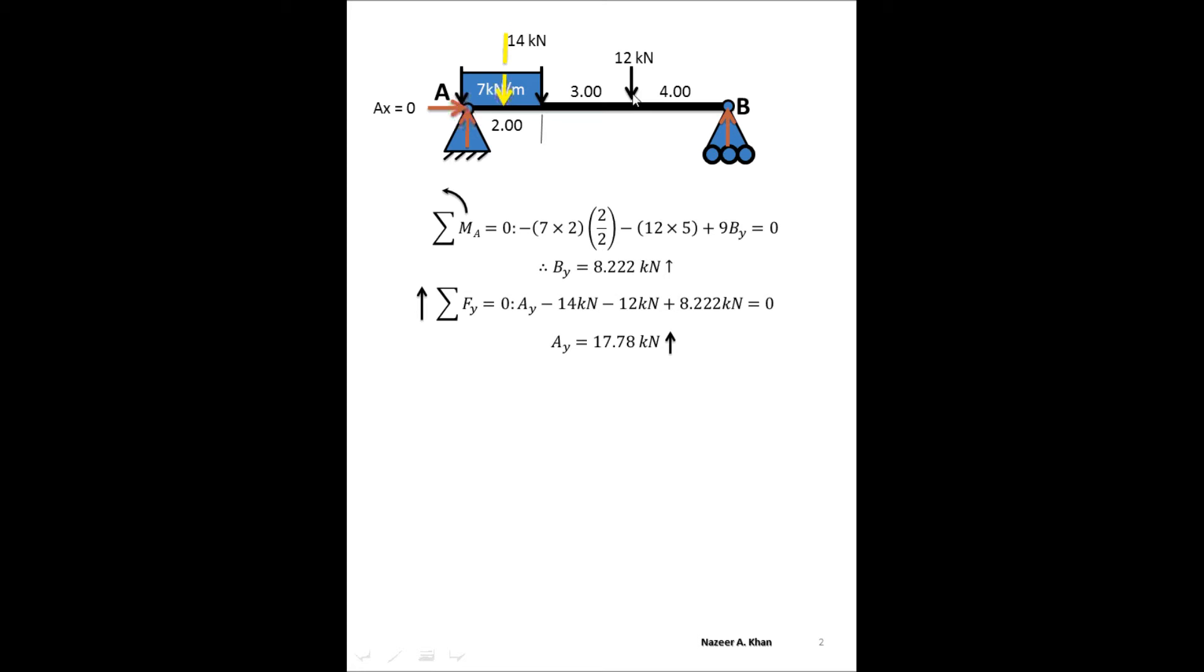When we look at the point load right here, again we have a negative rotation, it's going clockwise. We have a perpendicular distance to that line of action of two plus three, which gives you five. So minus 12 times five gives you minus 60. We also have a moment created by BY here going that direction. That particular moment has a perpendicular distance of nine. So nine times BY in the positive direction. When you crunch those numbers, you're going to have 8.222 kilonewtons as your reactant force.